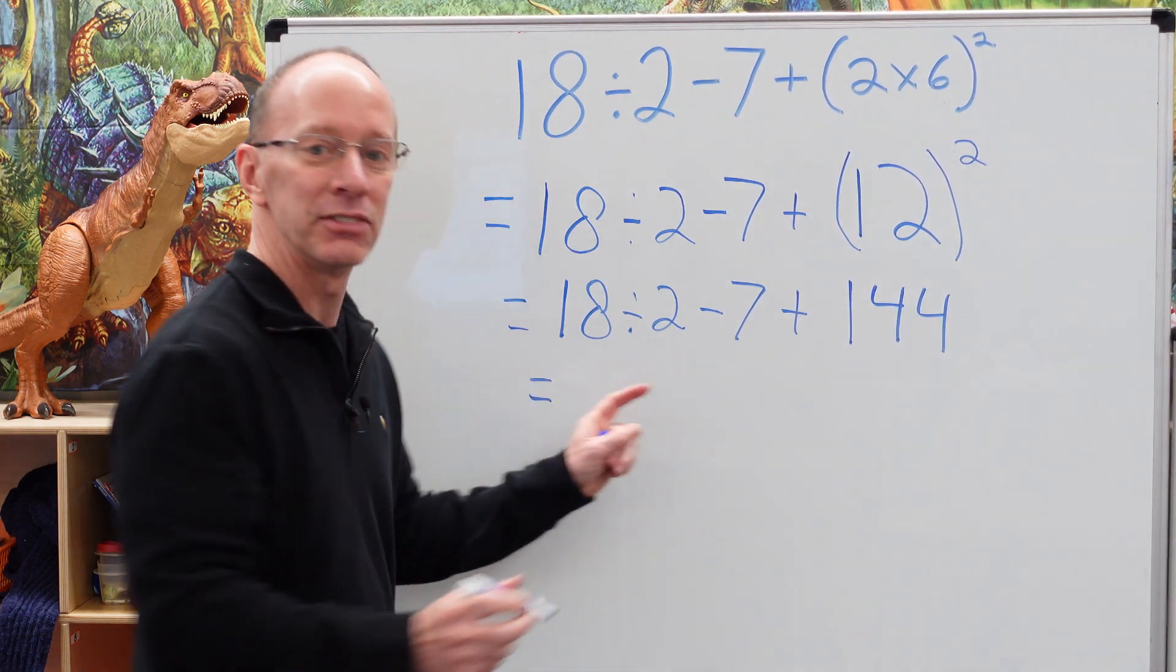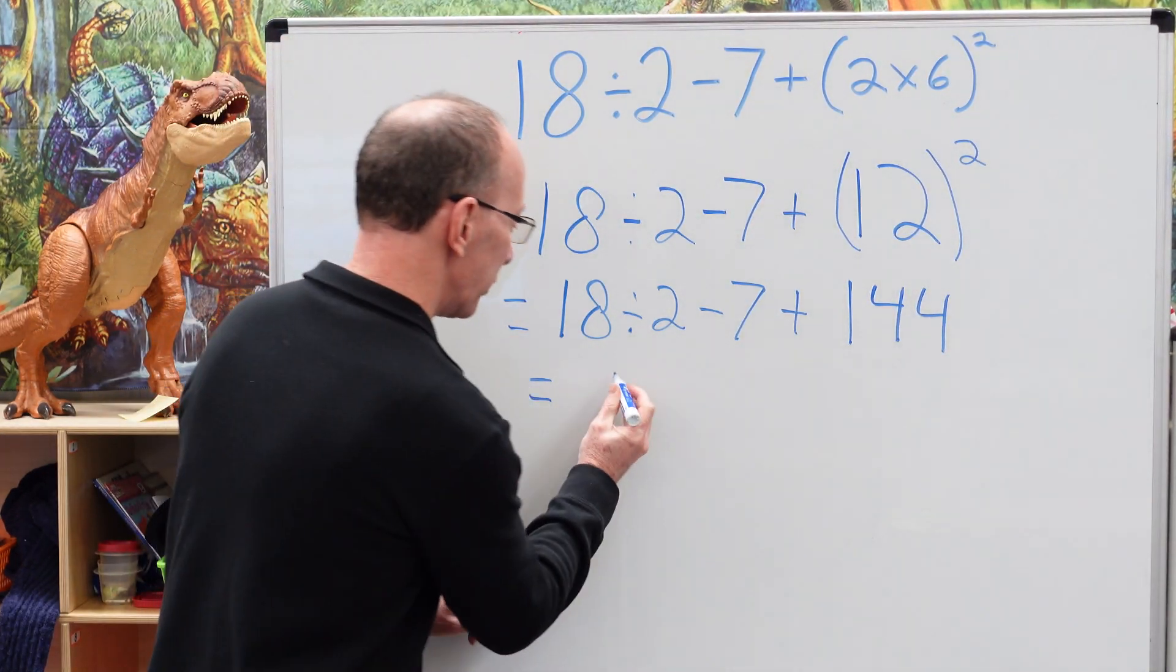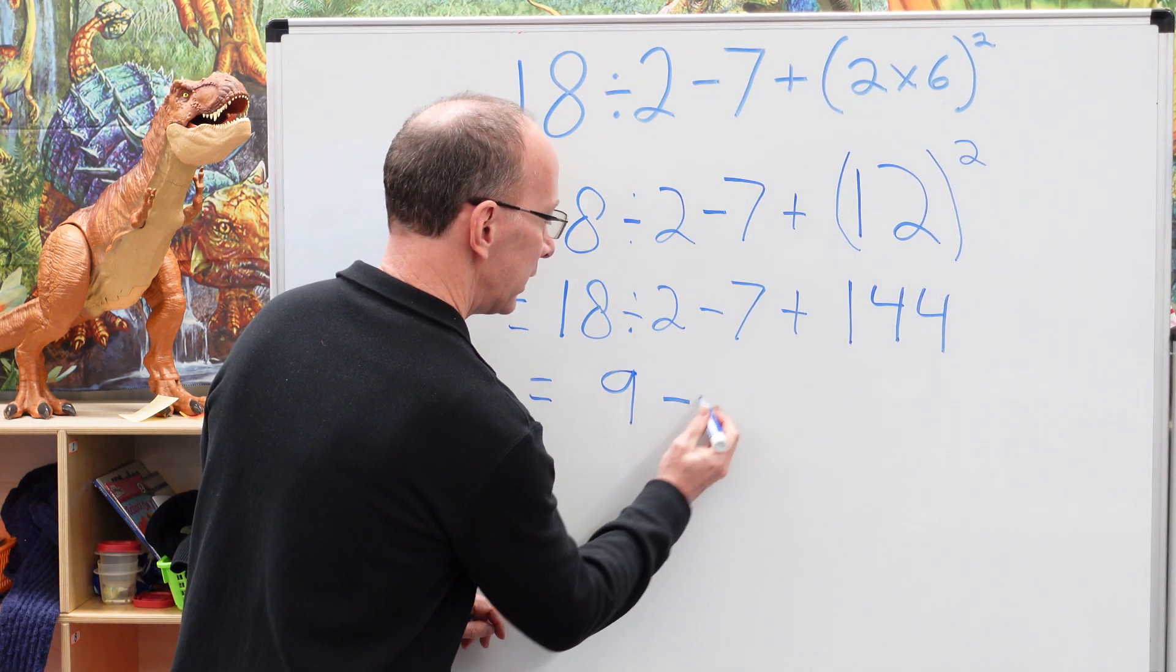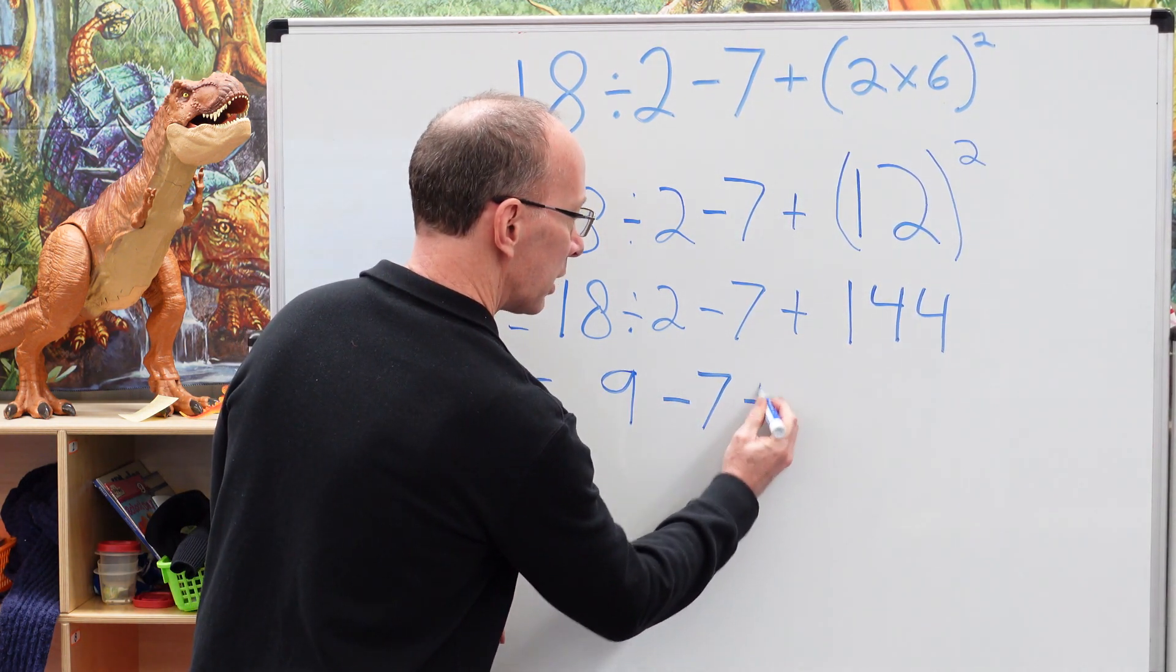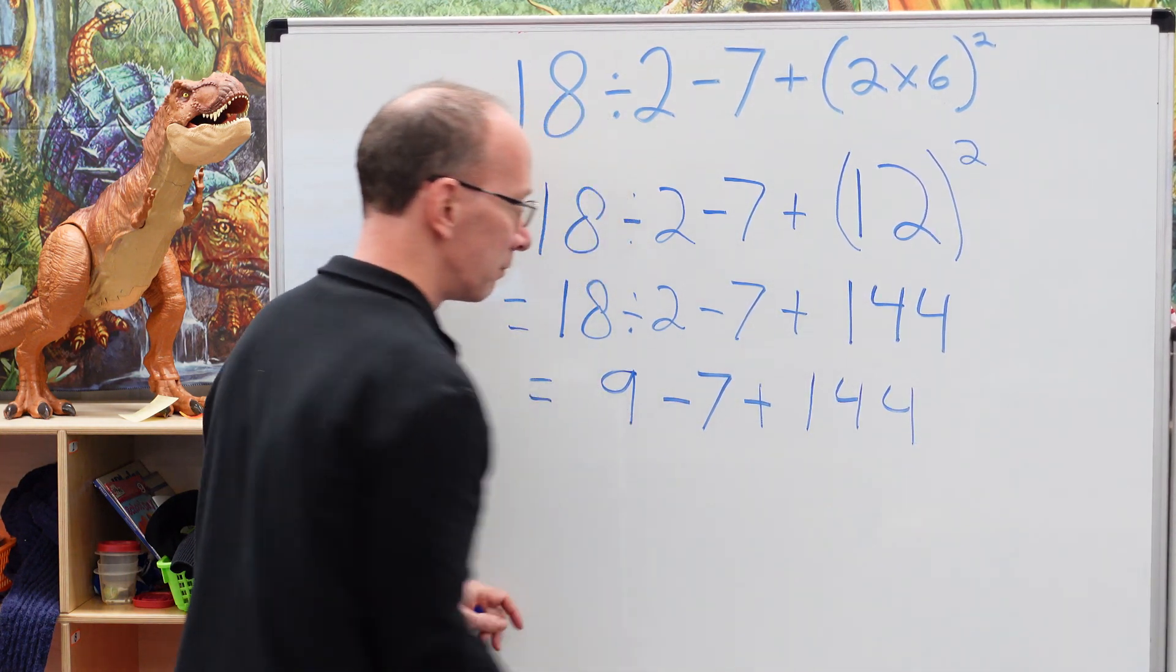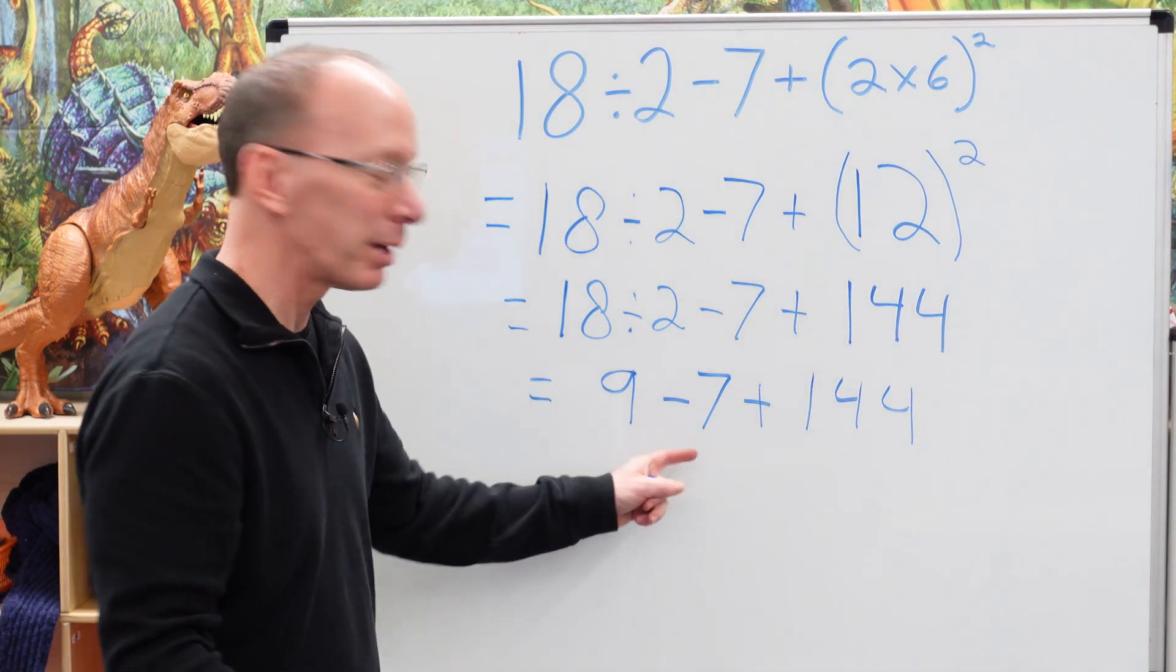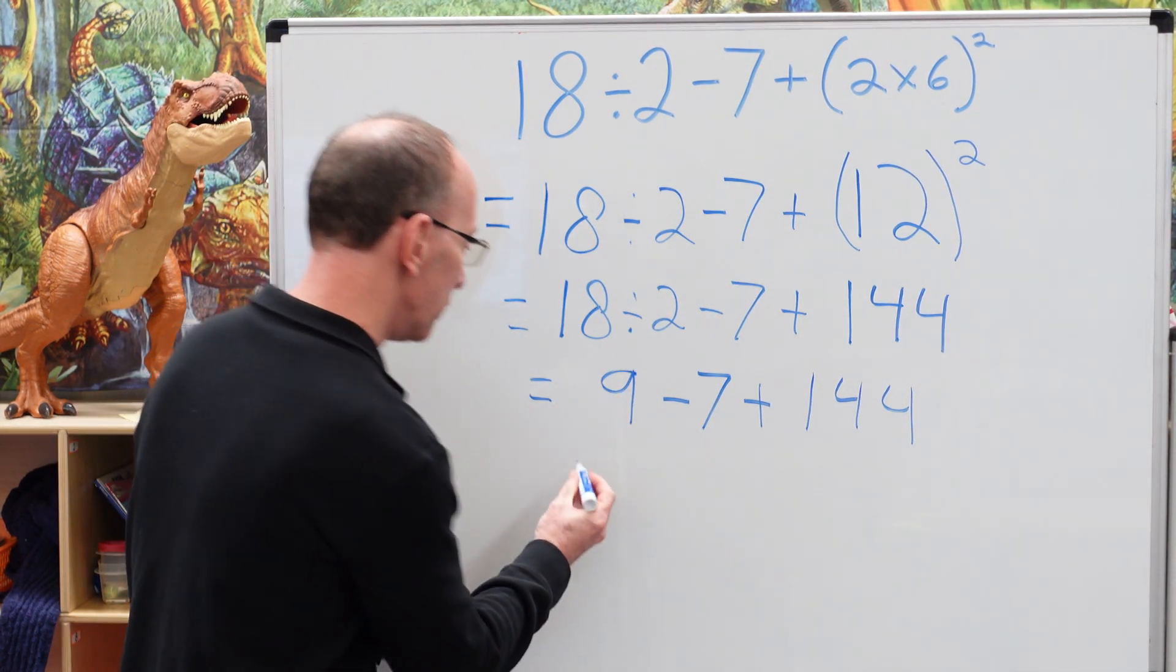Let's keep on moving. We have 18 divided by 2. What times 2 equals 18? 9. So we have 9 minus 7 plus 144. Now, addition and subtraction, we just from left to right. So 9 minus 7? 2.